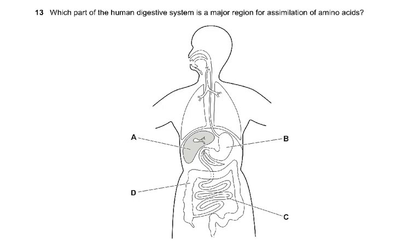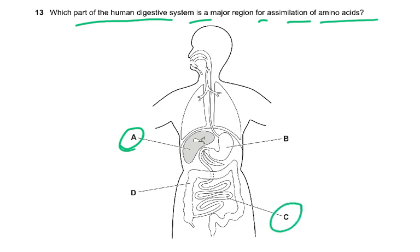Question 13: which part of the human digestive system is a major region for assimilation of amino acids? Assimilation means the use of absorbed nutrients. The liver decides which amino acids enter the bloodstream, uses them to make new proteins, and deaminates excess amino acids. The answer is A — the liver. Note: if the question asked about absorption, the answer would be the small intestine.